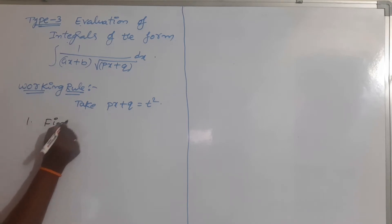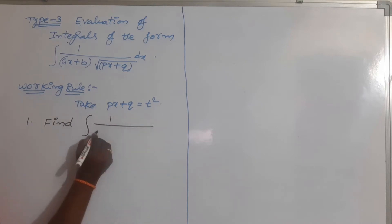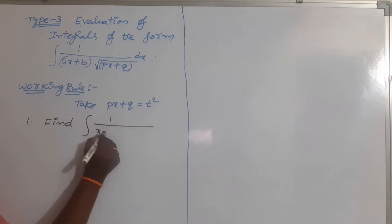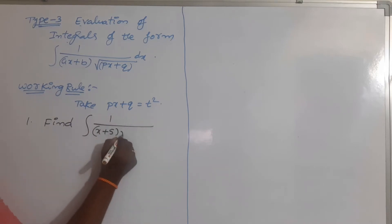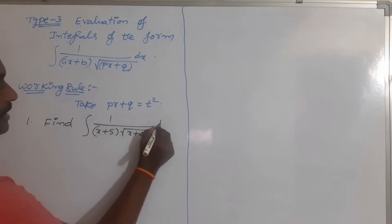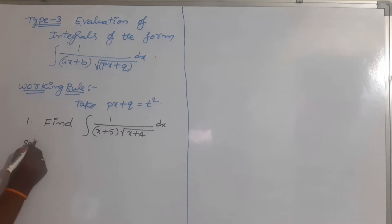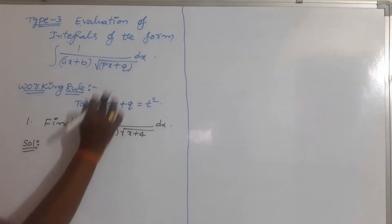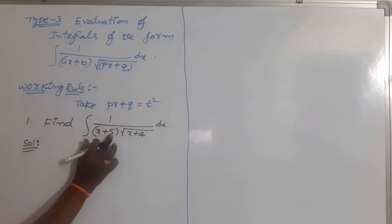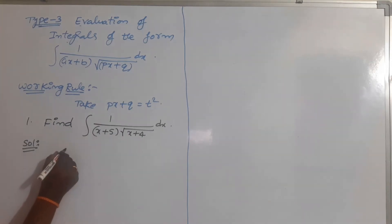See one example. Find the integration of 1 by (x + 5) into root over (x + 4) into dx. Clearly we observe that this problem is in the structure of 1 by (x + 5), which is a linear term, into root over (x + 4), which is also a linear term.